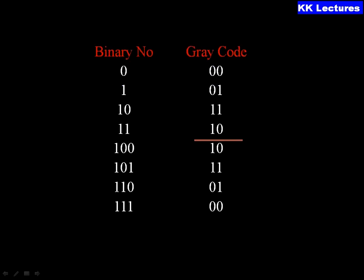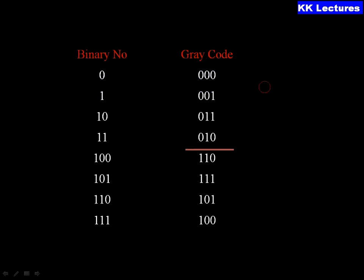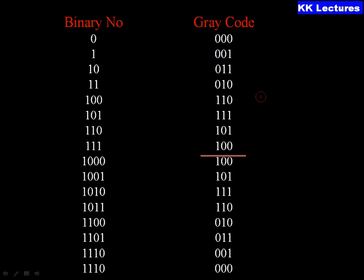After constructing the two-bit Gray code, place a mirror below it. The four codes reflected are written below the mirror. Adding ones below the mirror and zeros above the mirror, you can construct a three-bit Gray code. This gives Gray codes for binary numbers zero to seven. Adding three zeros above the mirror and three ones below gives the three-bit Gray code.